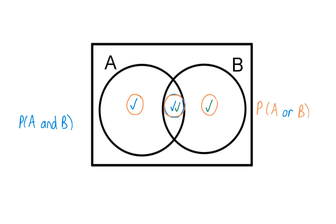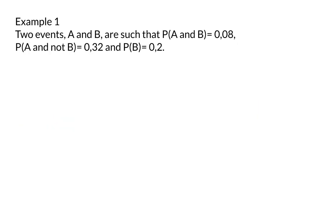Let's go and have a look at a few examples. Example 1. Two events A and B are such that the probability of A and B is 0.08, the probability of A and not B is 0.32, and the probability of B is 0.2. Determine the probability of A or B.